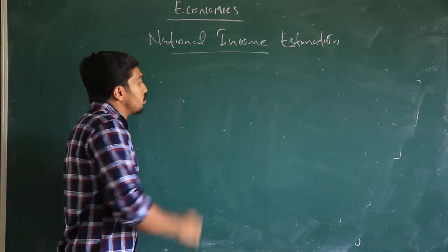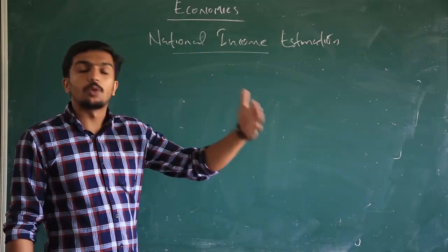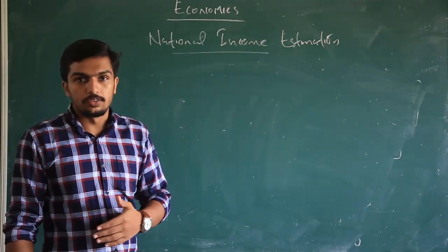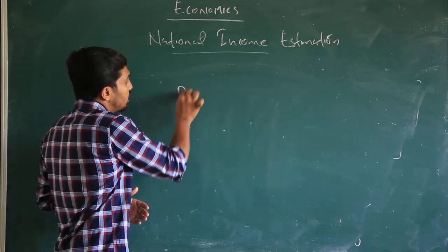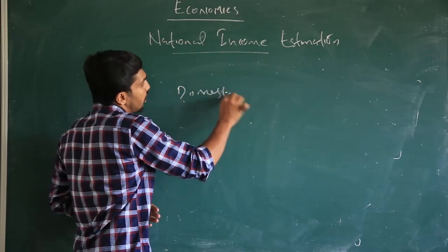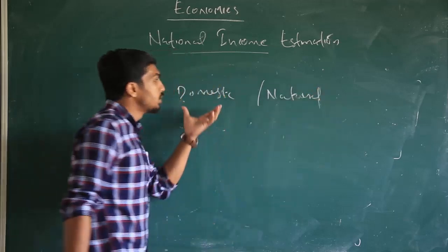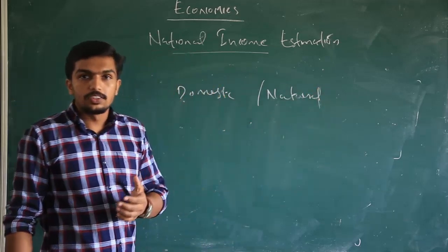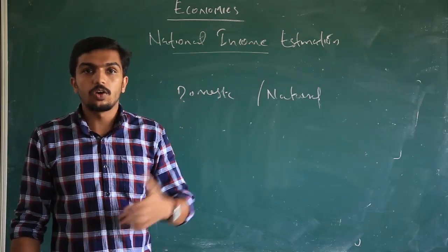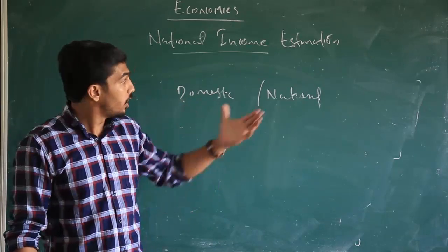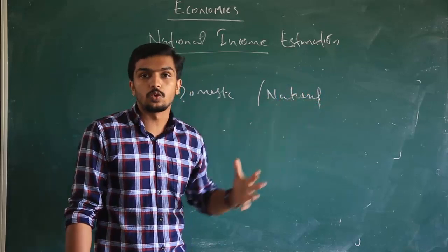The main National Income concepts are: National Income is considered as the Domestic Income and the Extended Income. The first main concept is the Domestic and National Difference. Domestic Income means the income earned from within the political boundary or domestic territory. For National Income, we consider the external source of income as well.